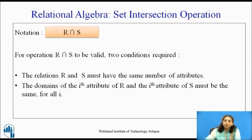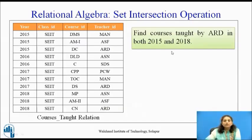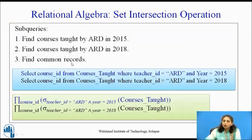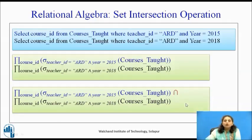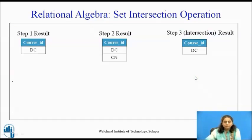Sometimes we want tuples that are common in both relations, so we perform set intersection. The two relations must again be compatible. Consider the query: find courses taught by ARD in both 2015 and 2018. Using the same sub-query expressions as before, we take the intersection, which gives the common tuples. The result of the first expression is DC and the second is DC and CN, so the intersection gives DC.